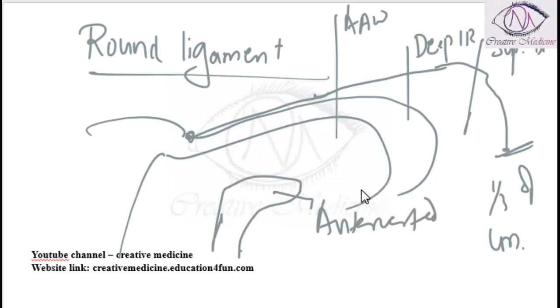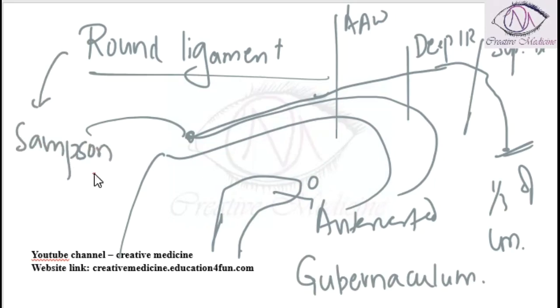The round ligament is actually derived from the gubernaculum. The blood supply to the round ligament is via Samson's artery, a branch of the uterine artery, which supplies blood to the round ligament.